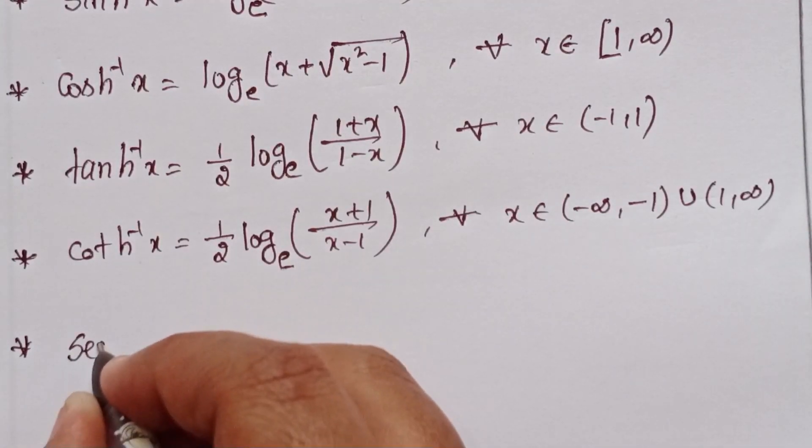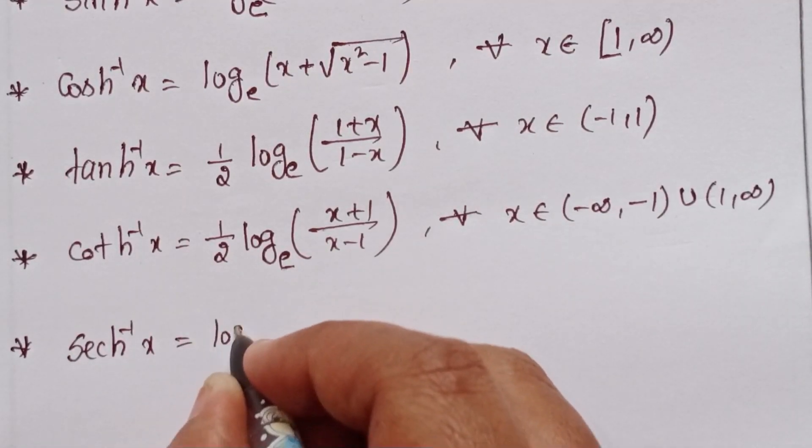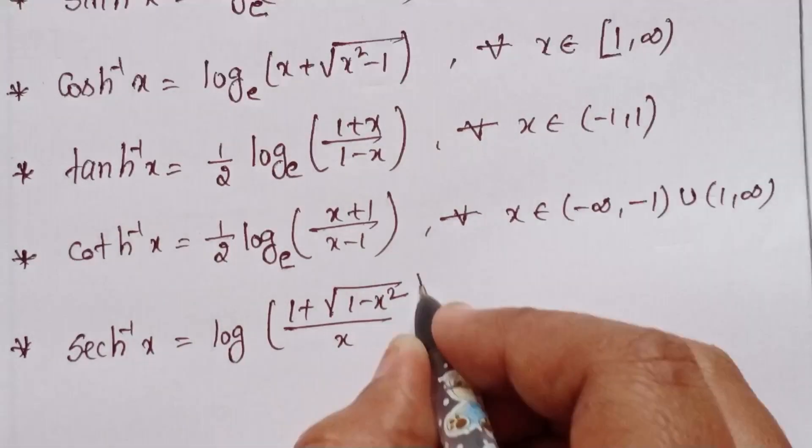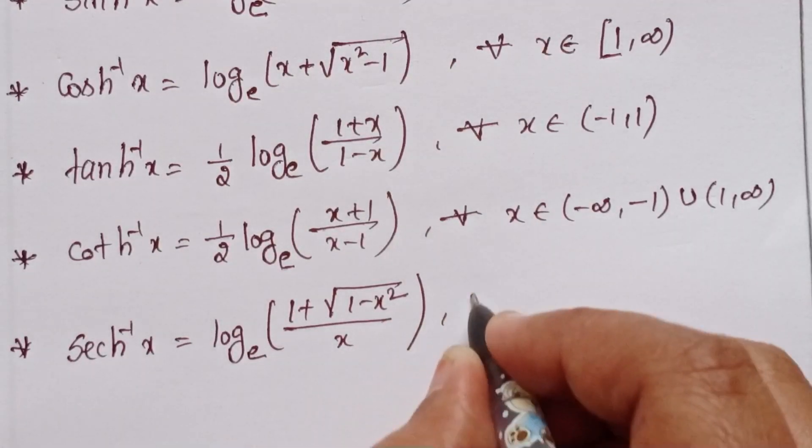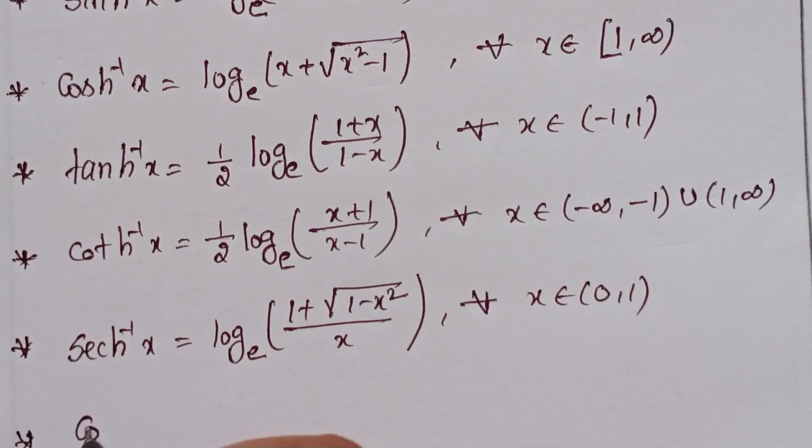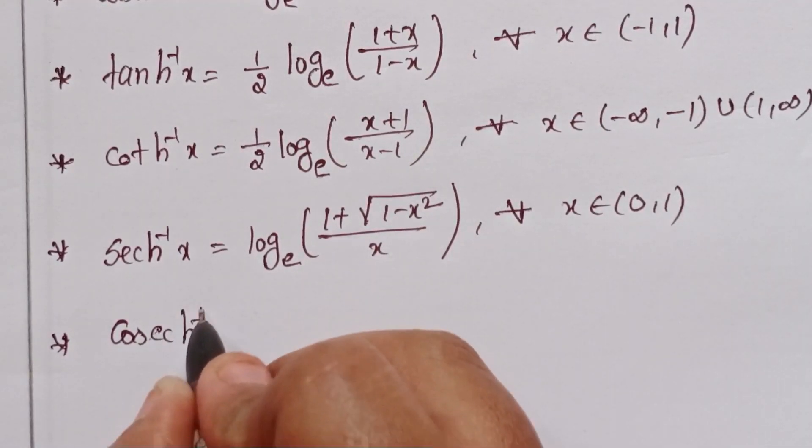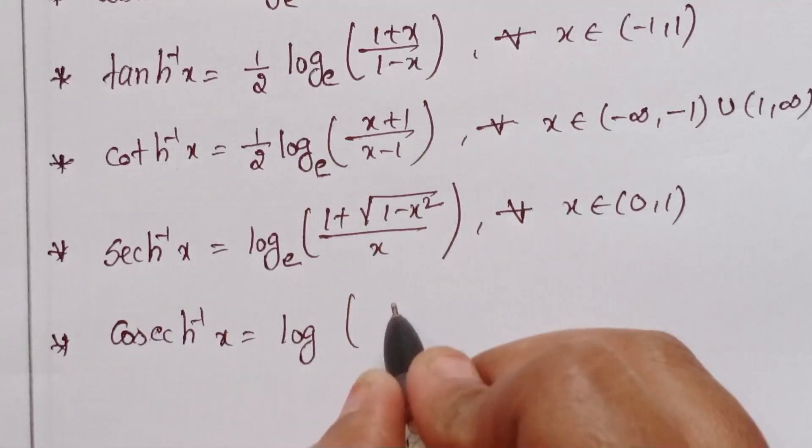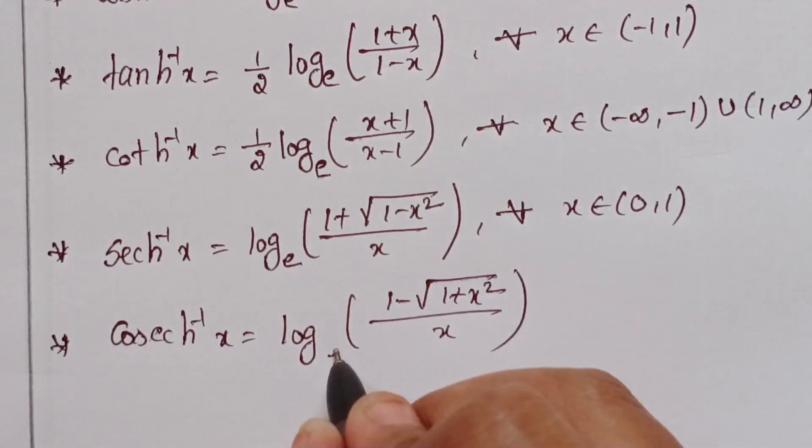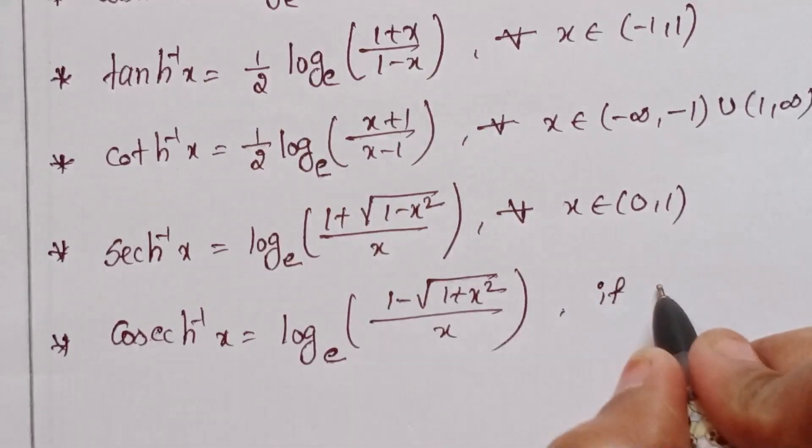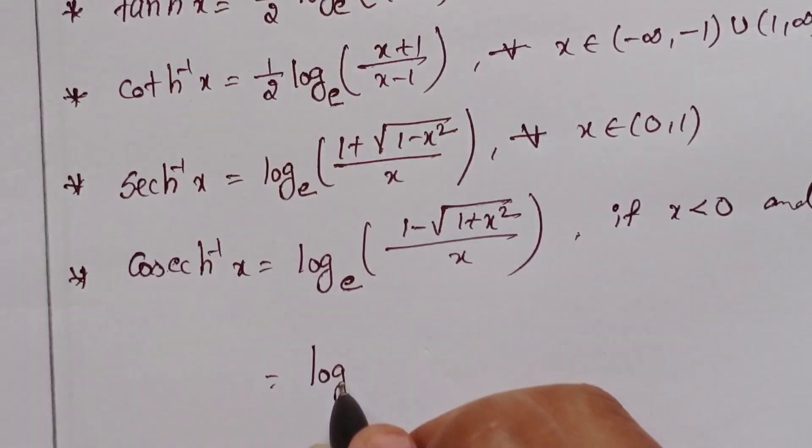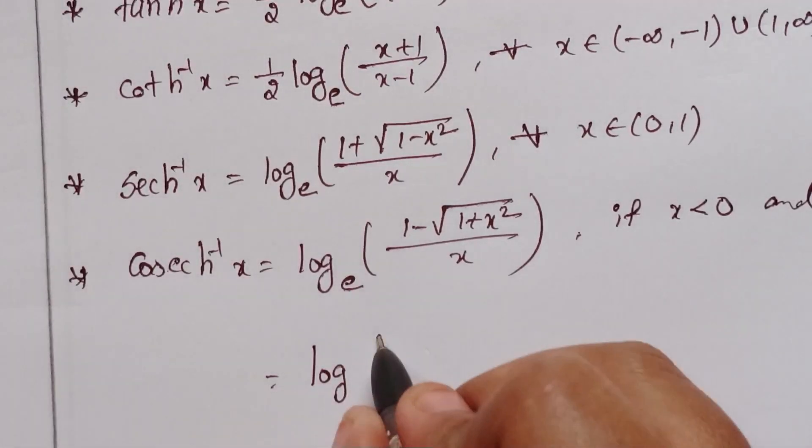Next, secant h inverse x equals log base e of 1 plus root 1 minus x squared, divided by x, for all x belongs to 0 comma 1. Next, cosecant h inverse x equals log base e of 1 minus root 1 plus x squared, divided by x. Condition is if x is less than 0, and another condition if x is greater than 0, you can use this formula.